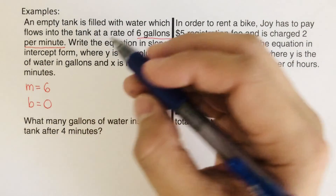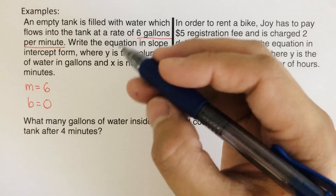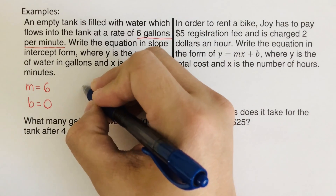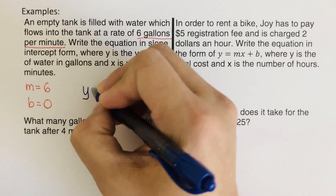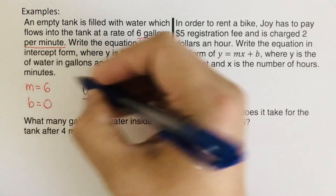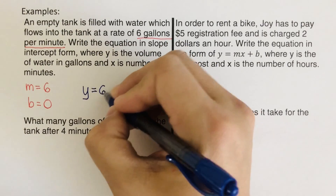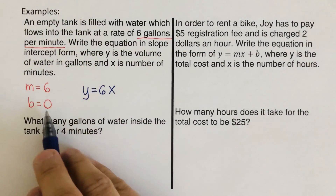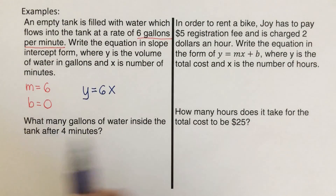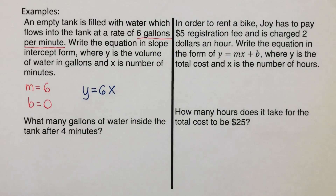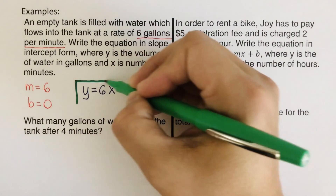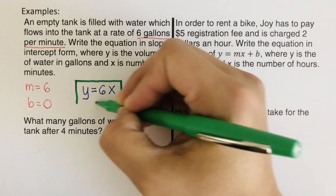We only need to change m and b. So our equation is y equals 6x plus 0 — and we don't need to write the 0. So this is our equation for this word problem.